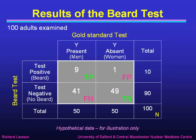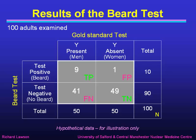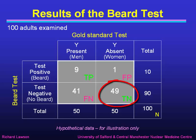Here are the results of a hypothetical beard test performed on a hundred adults. The gold standard genetic test says either that Y is present — which we'll call men — or Y is absent — which we'll call women. The beard test gives a positive result in nine men: those are true positives, people who have a beard and turn out to be men. We also get 49 true negatives — women without beards, where the gold standard says Y is absent and the beard test is negative.